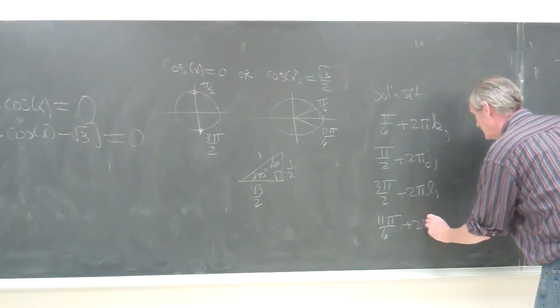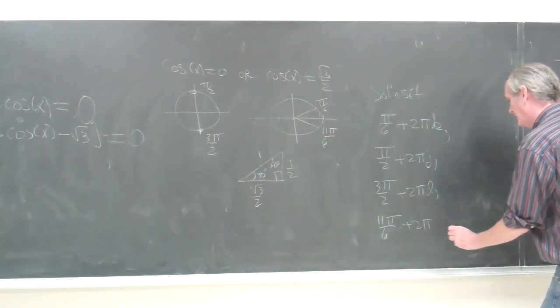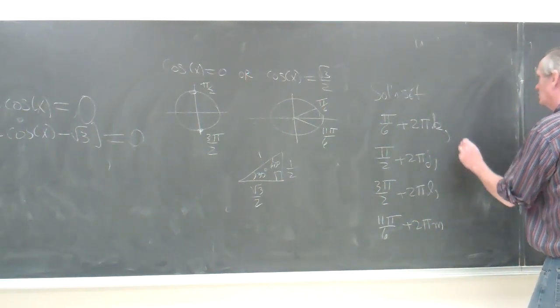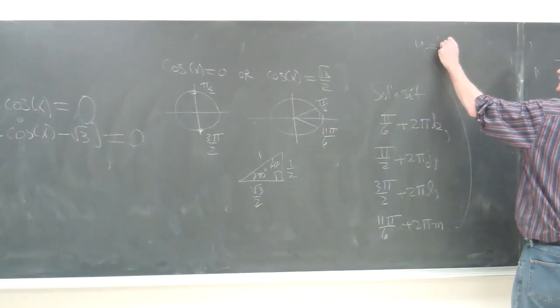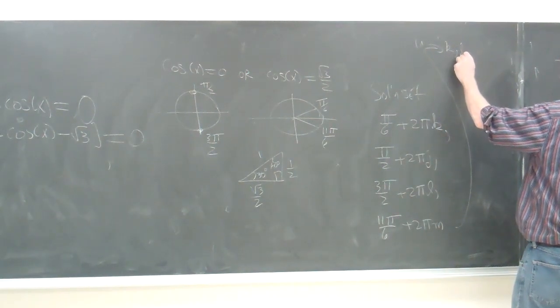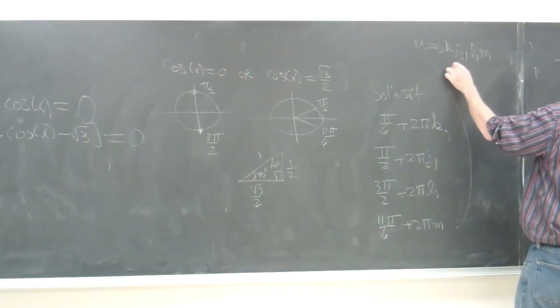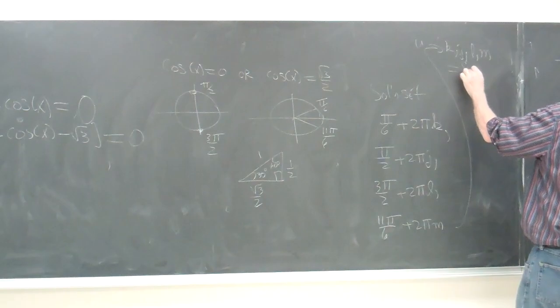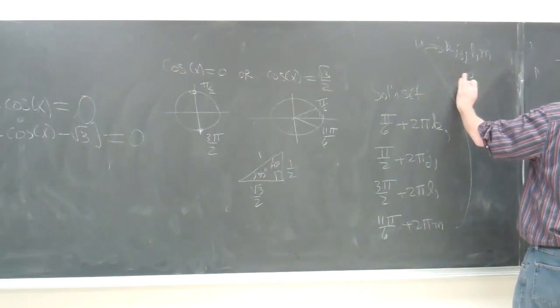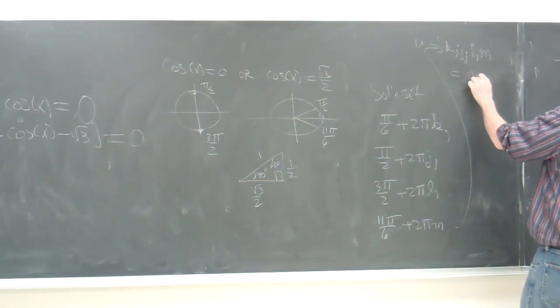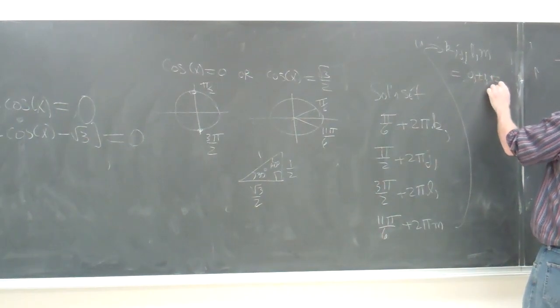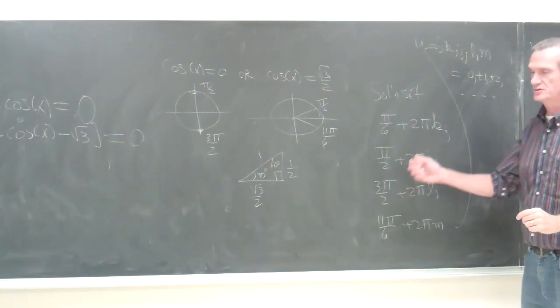Plus 2πm. And all of k, j, l, and m are integers that can be 0, plus or minus 1, plus or minus 2, and so forth. And that's your solution.